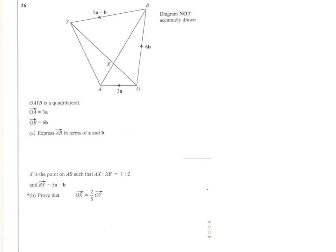So in question 26 we've been given a quadrilateral OAYB, and we're told that OA is 3a and OB is 6b.